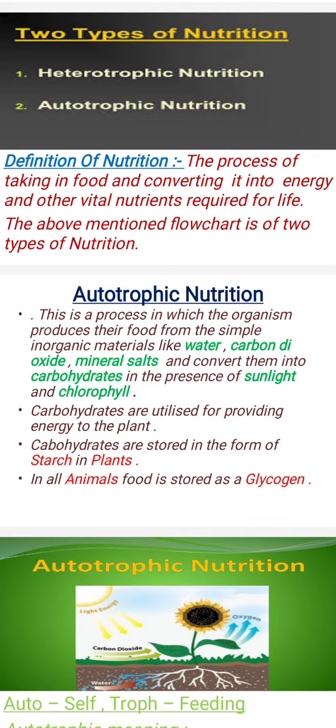Autotrophic nutrition is a process in which the organism produces its food from simple inorganic materials like water, carbon dioxide, and mineral salts, and converts them into carbohydrates in the presence of sunlight and chlorophyll. These carbohydrates are utilized for providing energy to the plant.